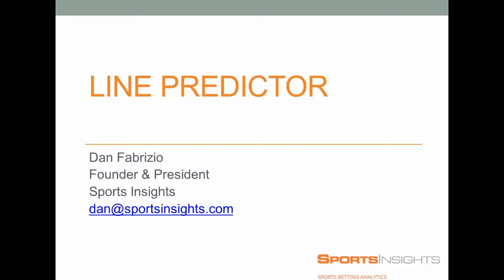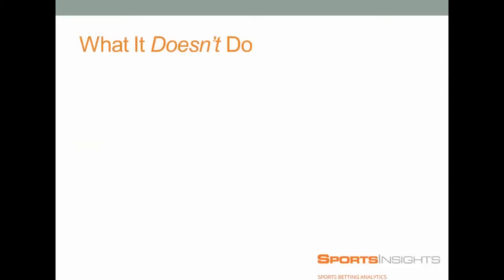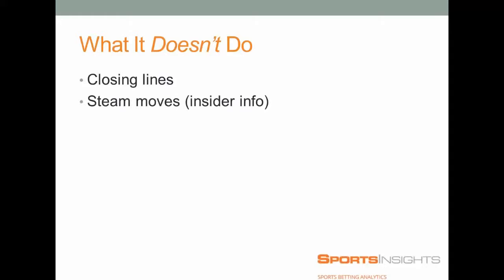I thought it would be good to start off with what it actually doesn't do, because there's been a lot of speculation. It does not predict closing lines. We know opening lines, and the predictor will tell you which way they're heading, but it won't tell you what they're going to close at. It does not predict steam moves. We don't have inside information — we don't know Billy Walters is on a game and we're going to tell you before the line moves.